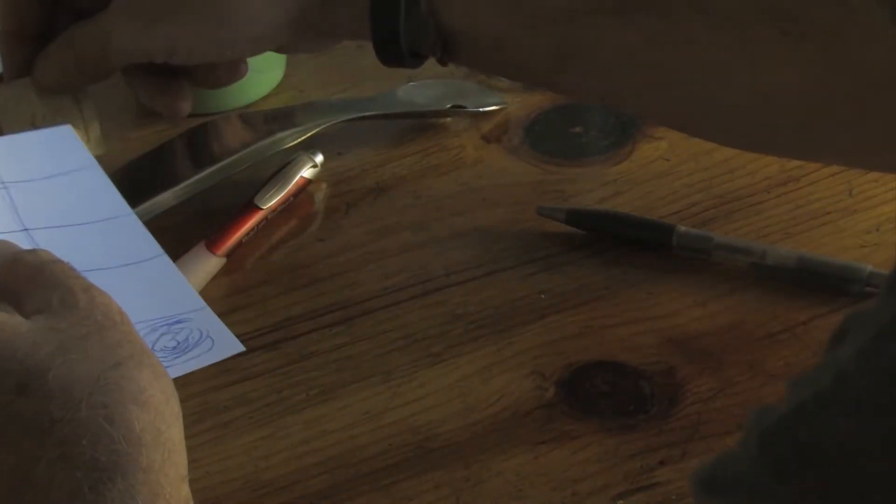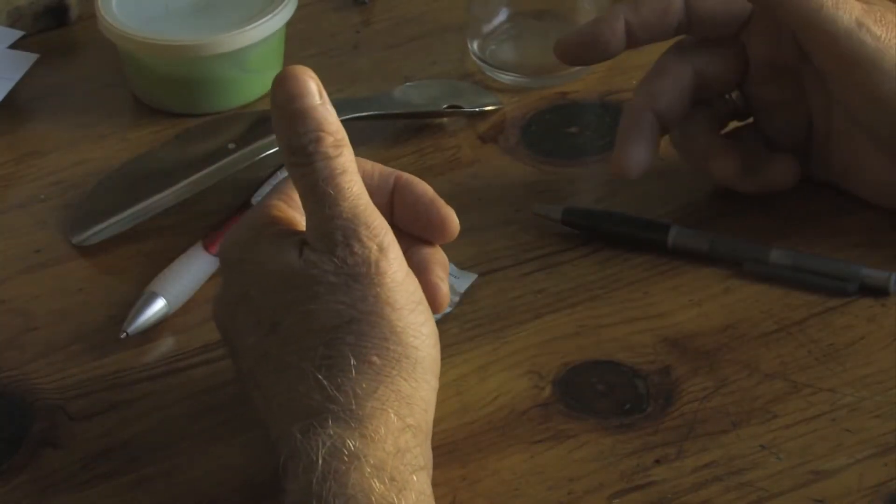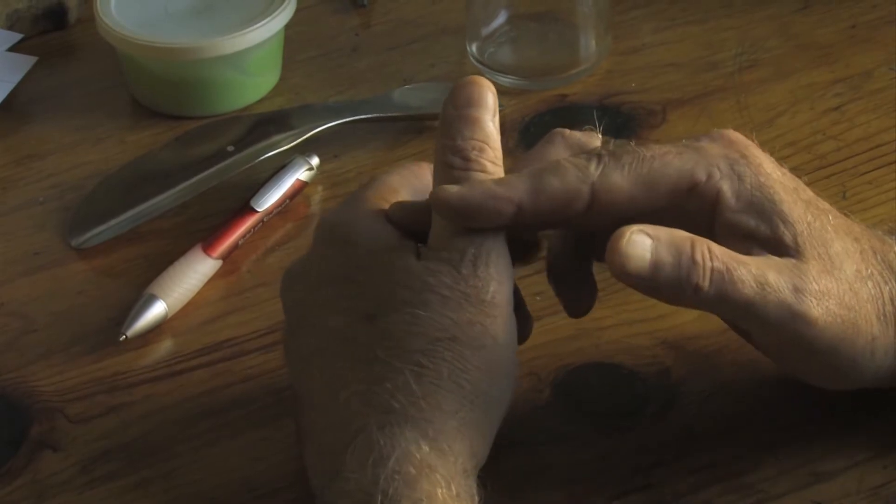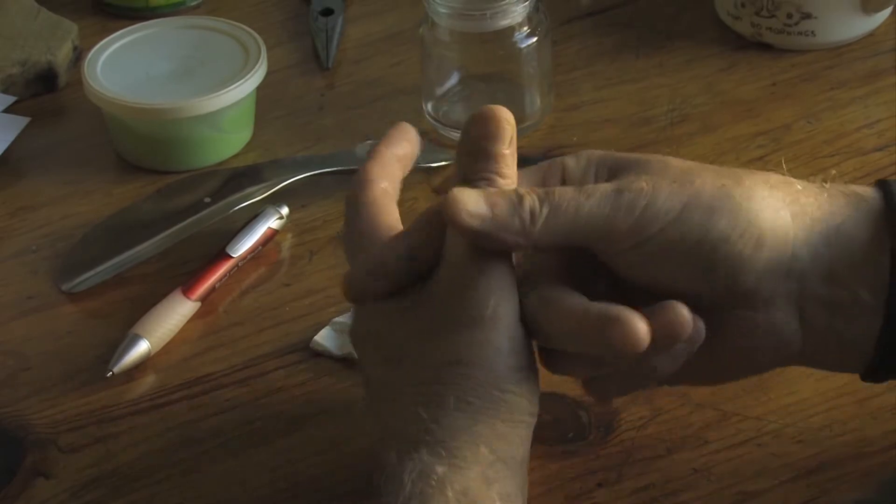Now, one way that's frowned upon here in San Francisco, but sometimes you have to remove the thumb. That's the very last resort—you're going to take the thumb off at the digit there.